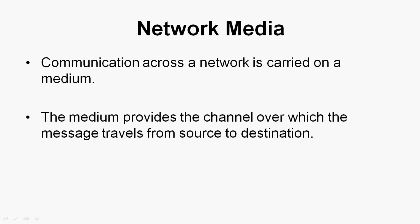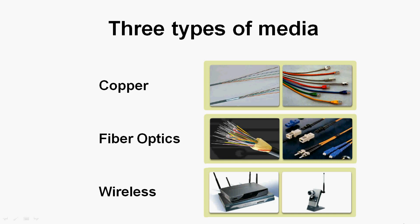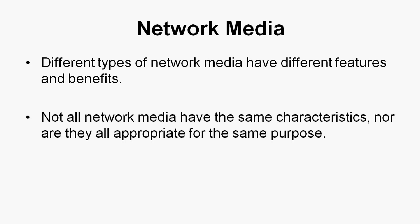Now we will go to the next category: network media. Communication across a network is carried on a medium. The medium provides the channel over which the message travels from source to destination. There are three types of media: copper, fiber optics, and wireless. Different types of network media have different features and benefits, and not all media are appropriate for the same purpose.